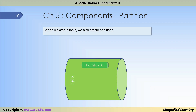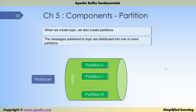When we create a topic, we also create partitions. If we think of a topic as a pipe, then partitions can be thought of as small pipes inside the topic, as shown in the diagram. When a message is published to the topic, Kafka will put it in one of the partitions. In this example, a topic contains N partitions, and a message produced by the producer is routed into one of those partitions.